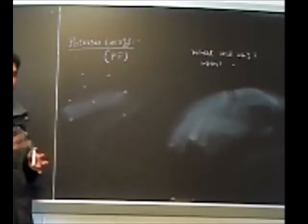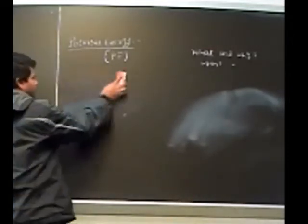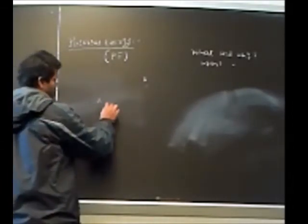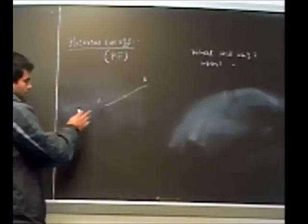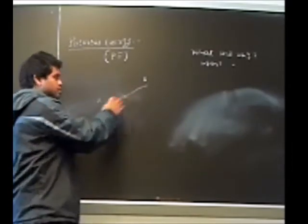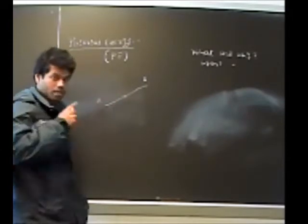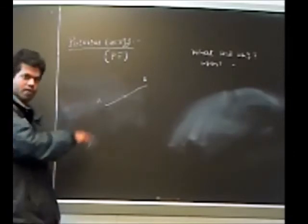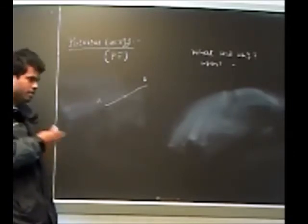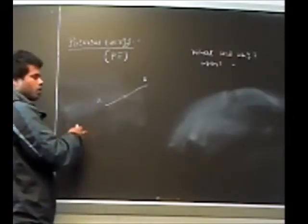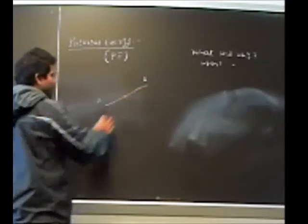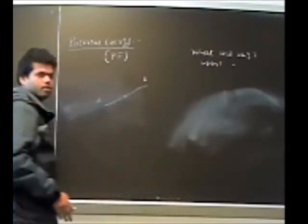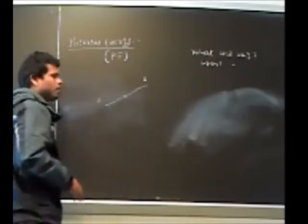Now suppose this blackboard region is a force field. Consider two points A and B, and a particle moving from A to B. As it moves, at every point during its journey it is subjected to a force by the force field and has a displacement, so work is being done by the force field. This work means the force field is losing some energy, which gets stored in the particle — we call it potential energy.